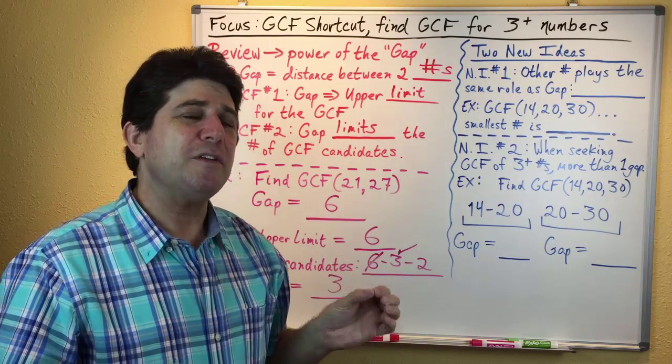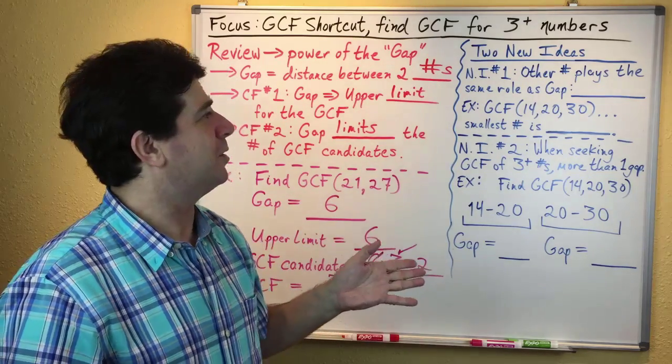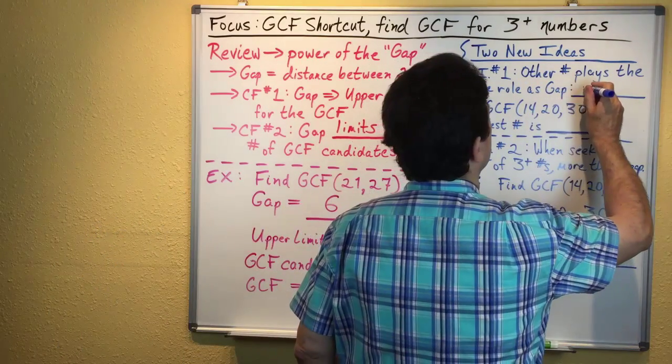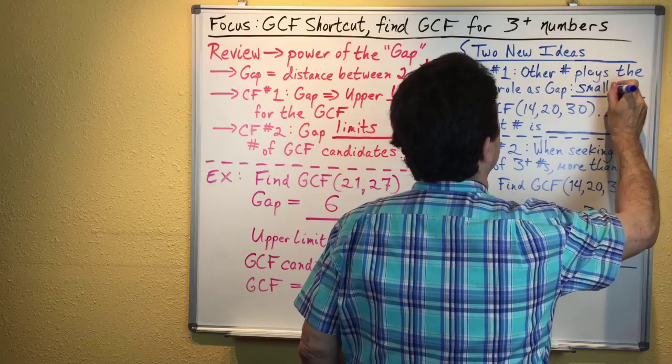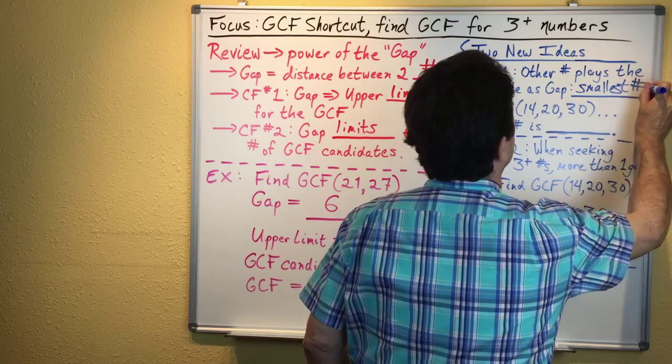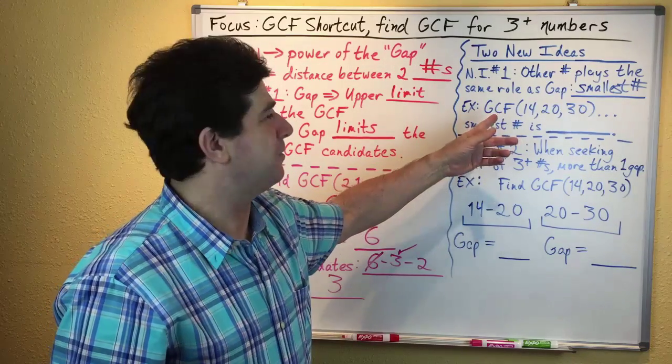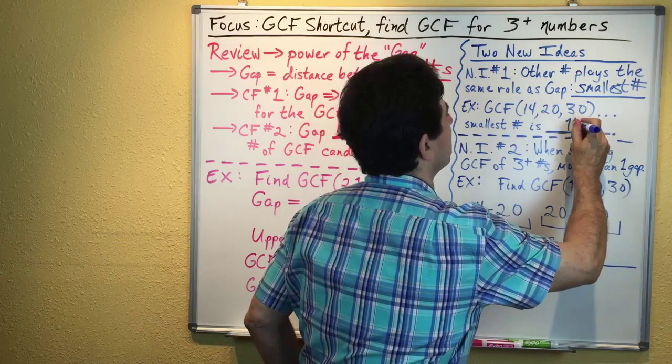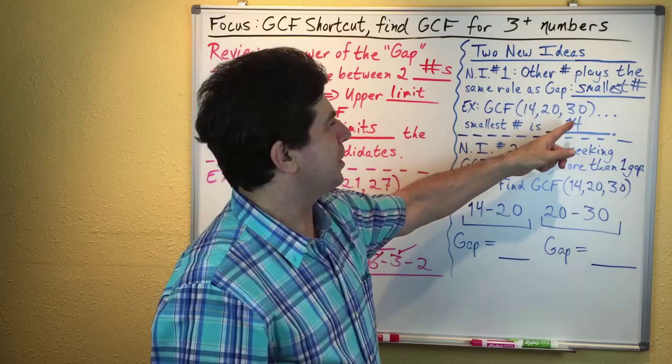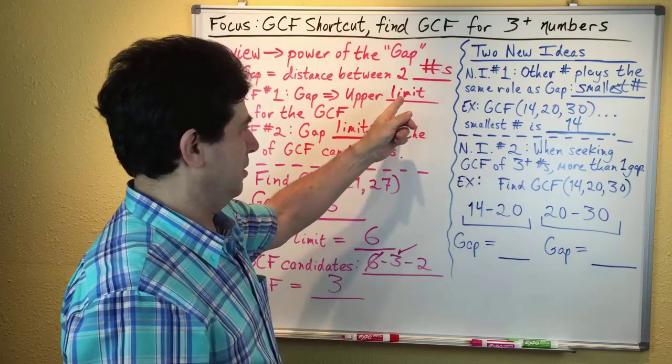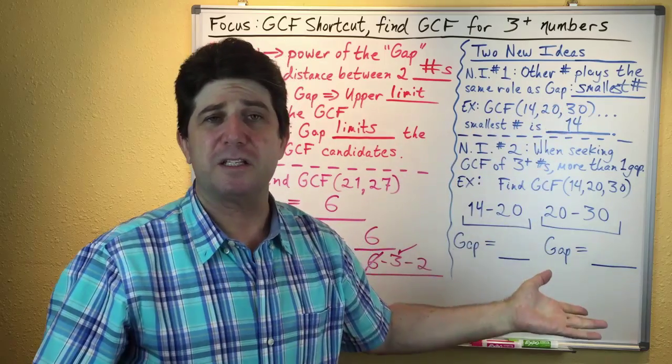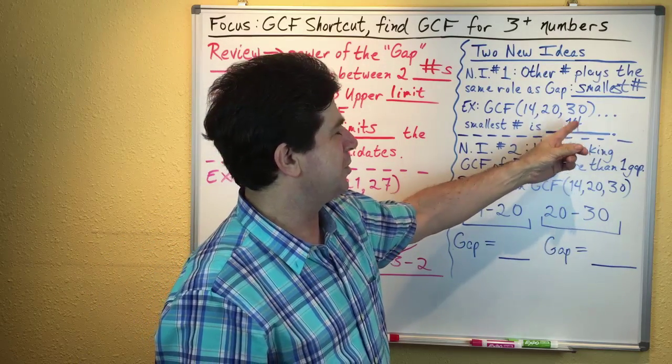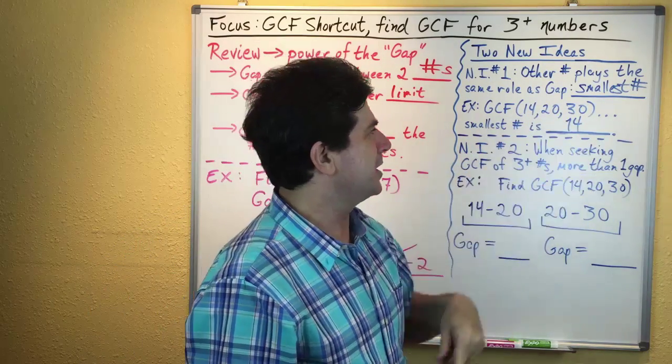New idea number one: there's another number that plays the same basic role as the gap, and that's the smallest number of the numbers under consideration. For example, if we're trying to find the GCF for 14, 20, and 30, the smallest number is 14. That means 14 is the upper limit for the GCF, and the candidates would be the factors of 14, which are 14, 7, and 2.